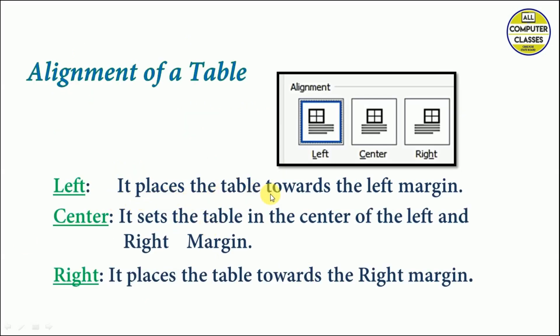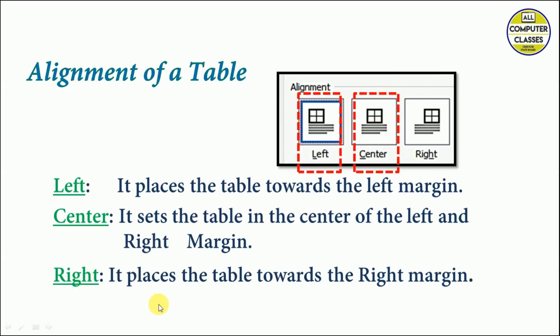Left alignment places the table towards the left margin. Center sets the table in the center between the left and right margins. Right alignment places the table towards the right margin of the page. Let's see practically how to align a table on a page.